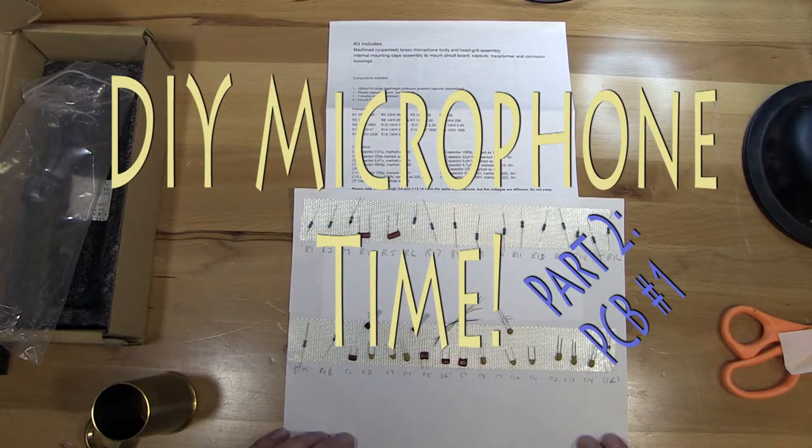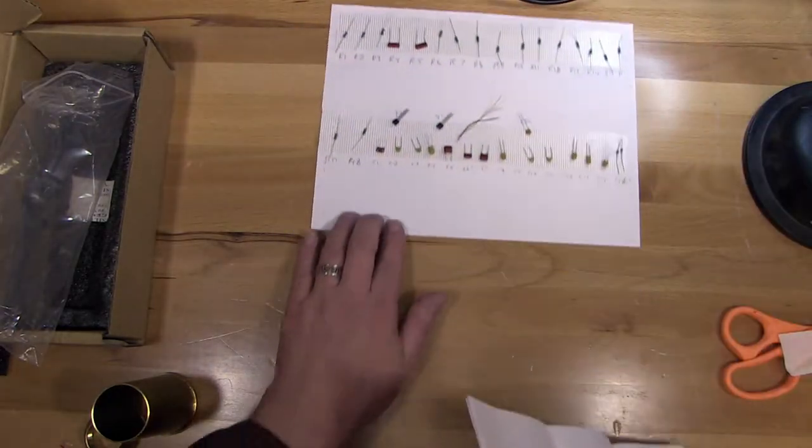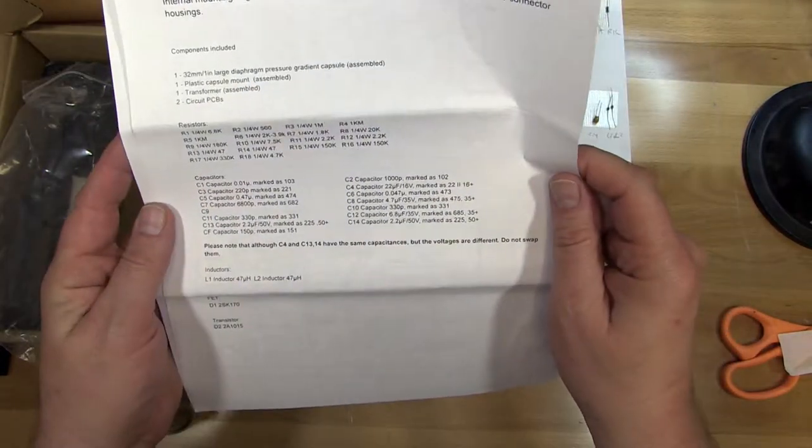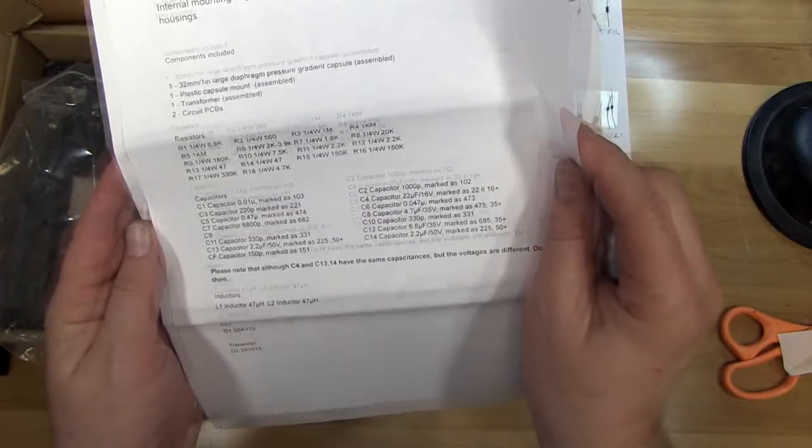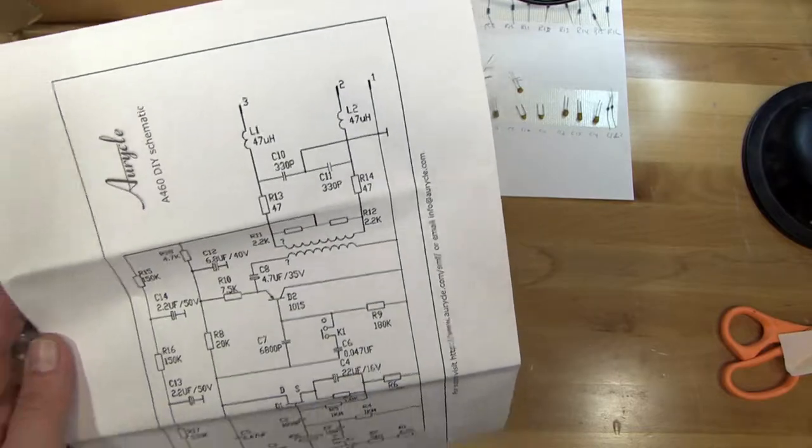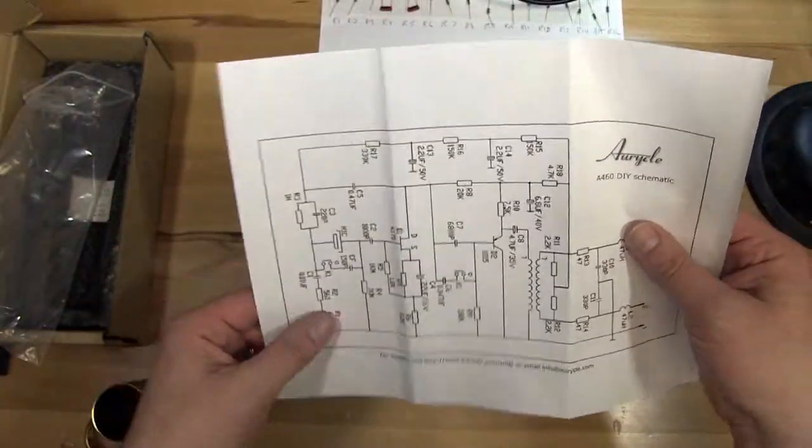So we've got all our components laid out, so we know what they are. We'll slide those out of the way for now. Here's our list of the components. Leave that out of the way. And then we have the schematic.